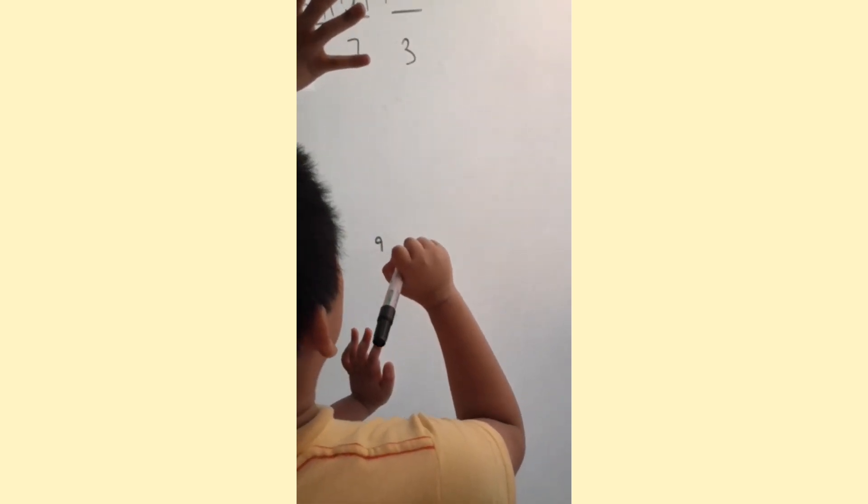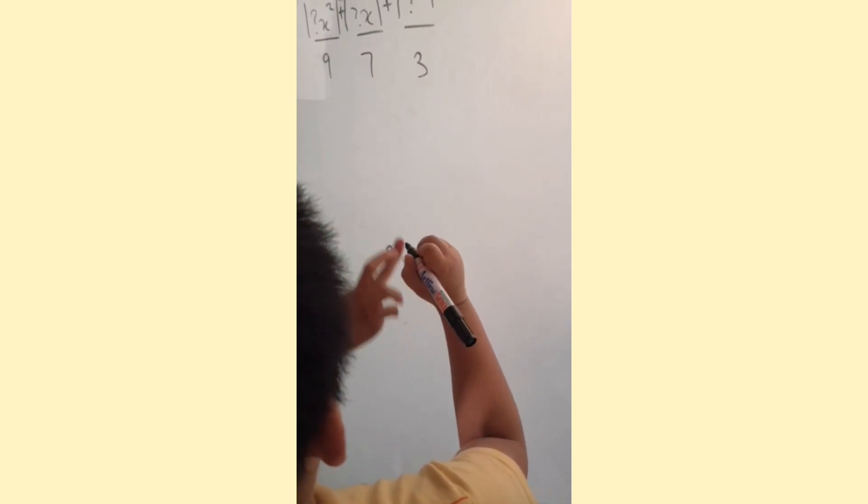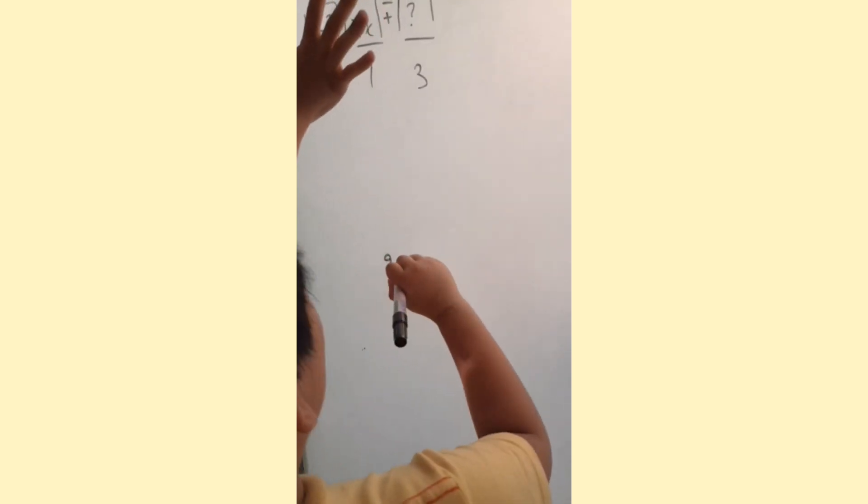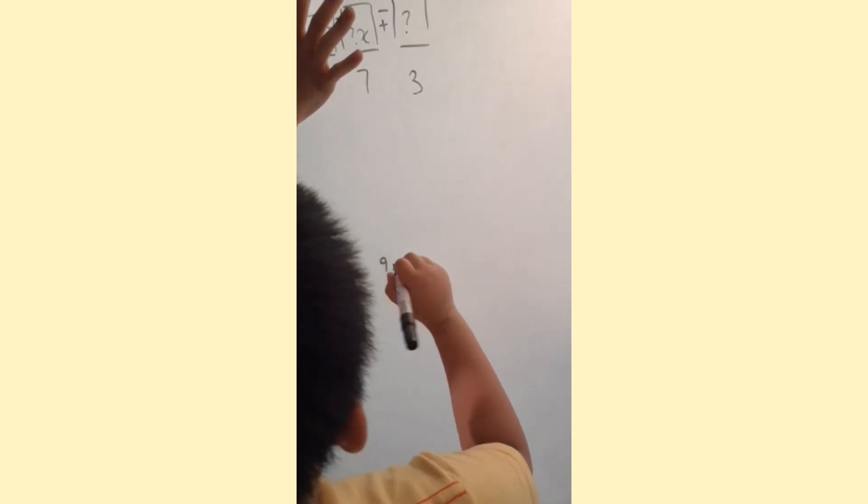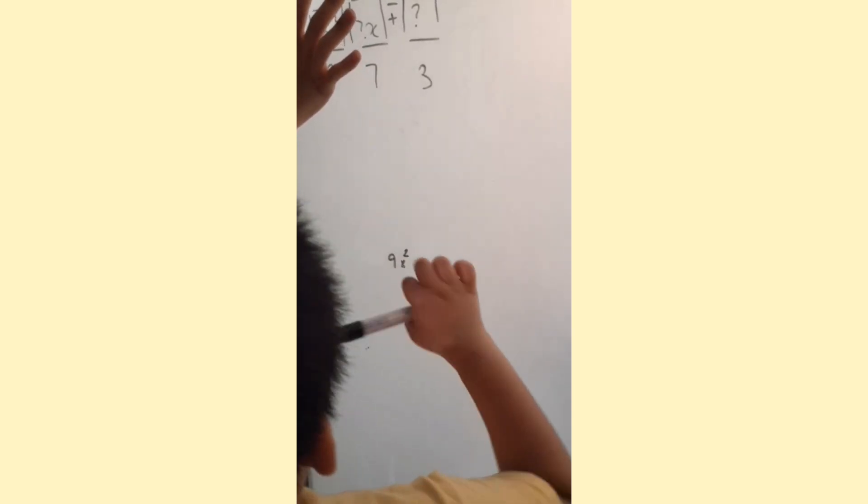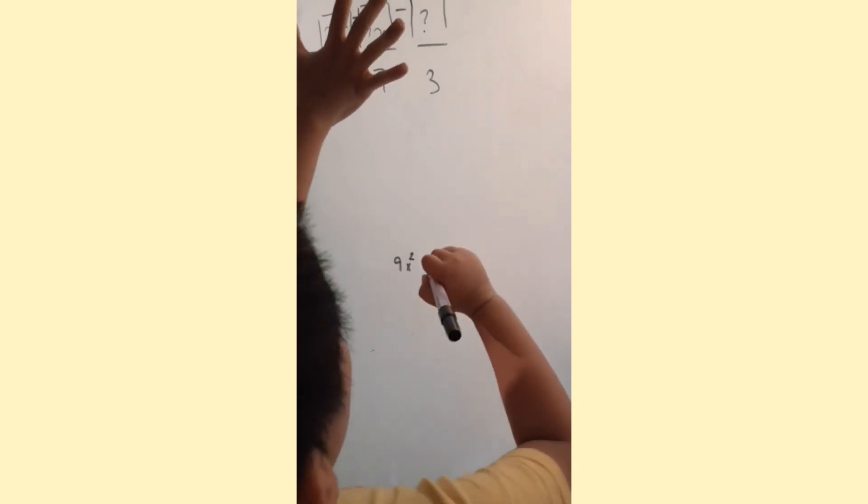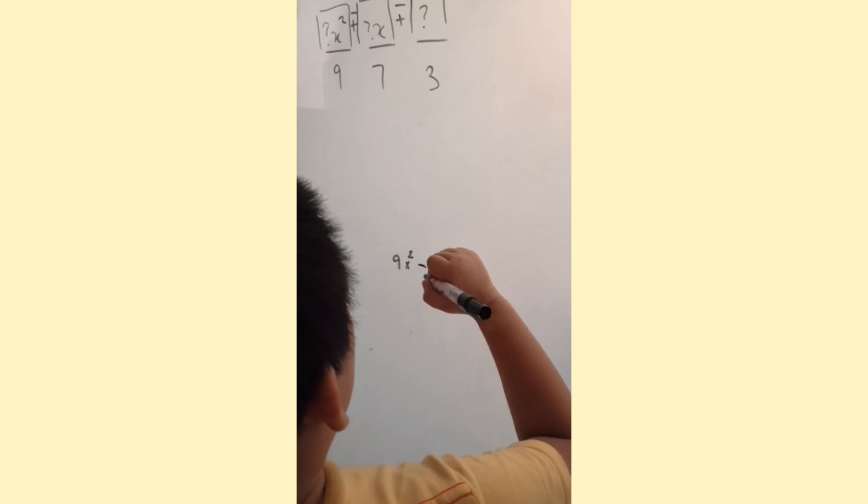What must it have? Nine. No. Before that, what letter? X. And? Square. That's not two. It's not called a two. It's called a square. So that's your first one. I want you to put a minus.